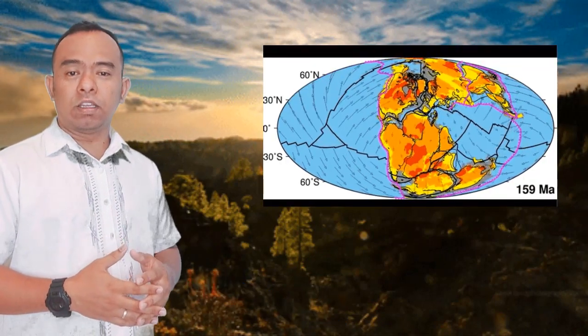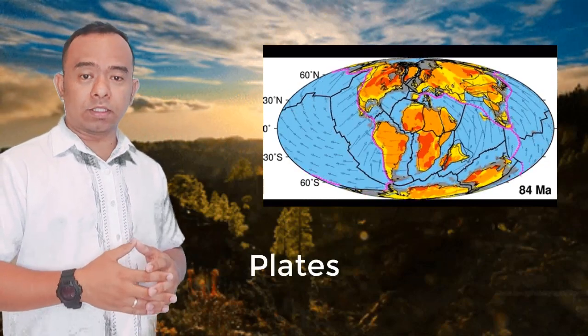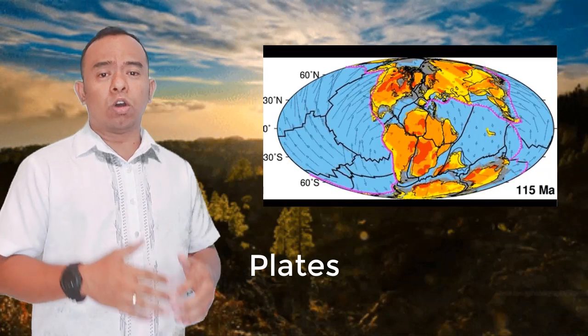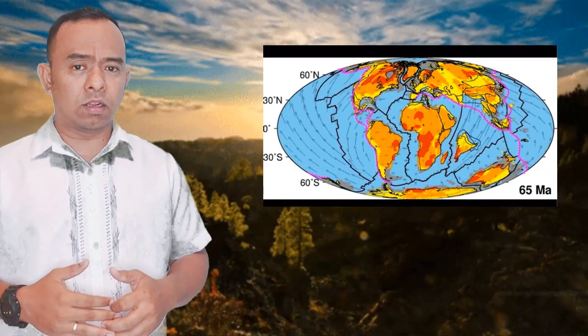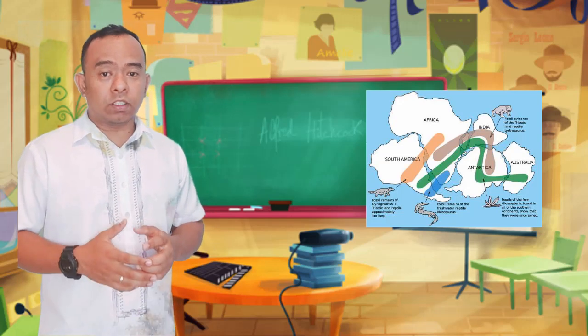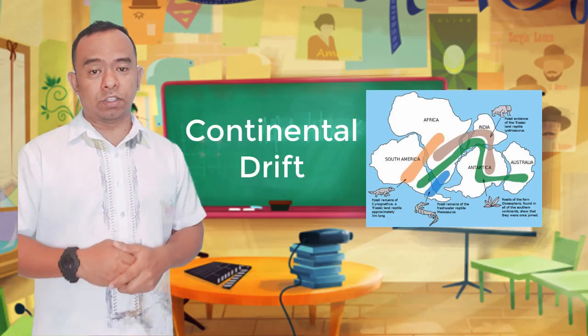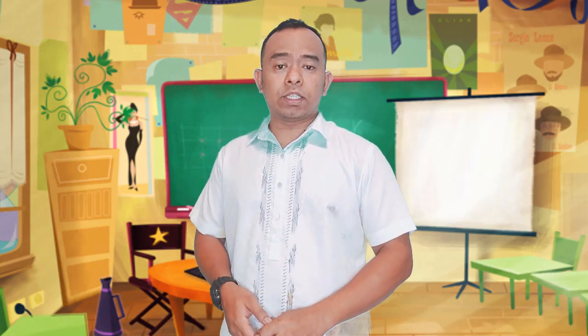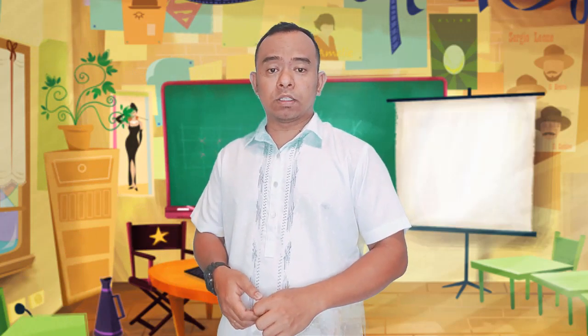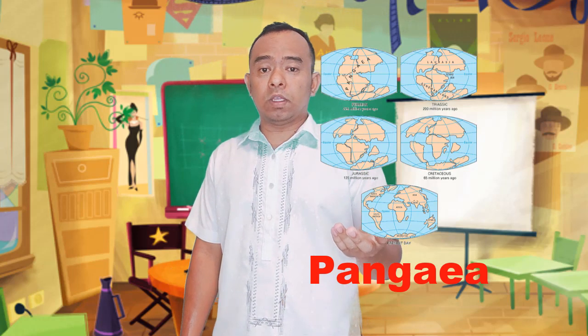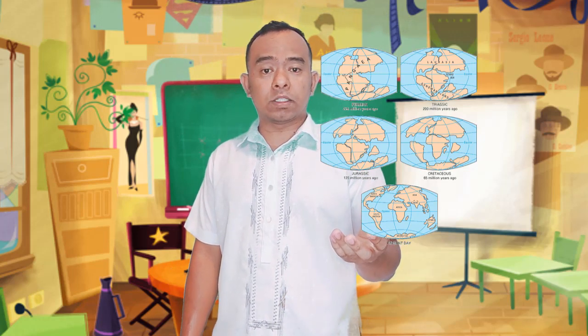The earth's crust is cracked and fragmented, and these fragments are called plates. These plates are moving on top of the mantle. The theory of plate tectonics starts with another idea, which is continental drift. The earth once had a single landmass called Pangaea that broke apart into pieces and drifted away to form the landmasses of today.